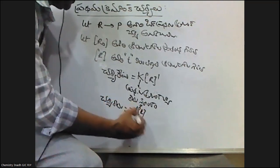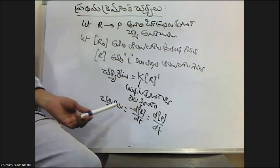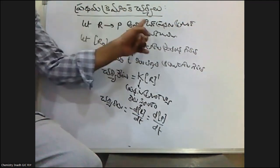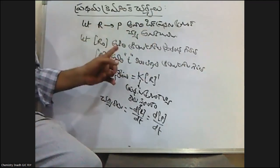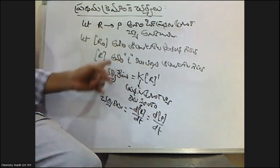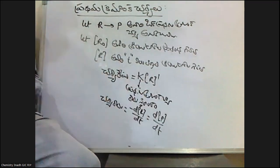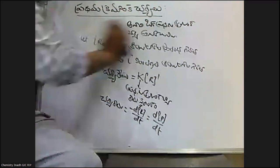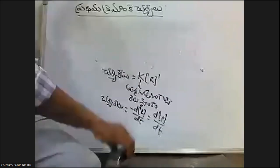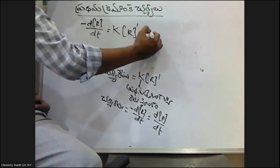The rate is equal to minus dR by dt, which is equal to dp by d. DR by DT is equal to K into R power 1. R power 1, we write R.